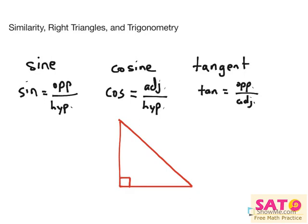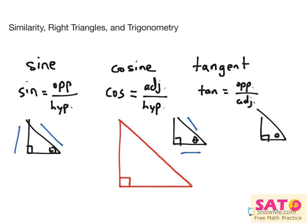How would this look like? Well, for sine, let's say we're solving for this angle, we would say opposite over hypotenuse. For cosine, it would be adjacent over hypotenuse, and tangent, it would be opposite over adjacent.